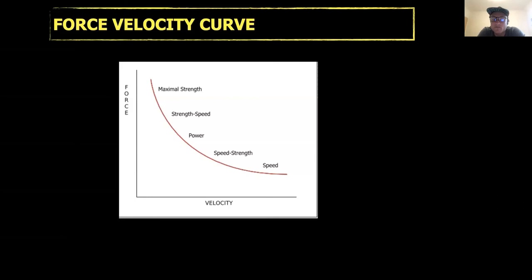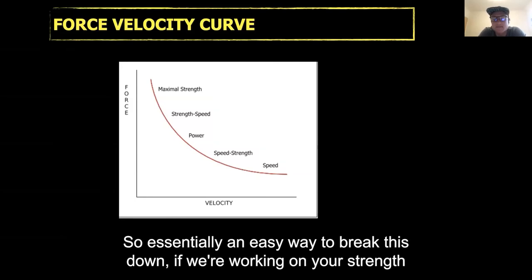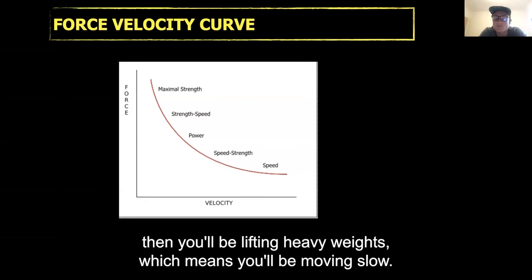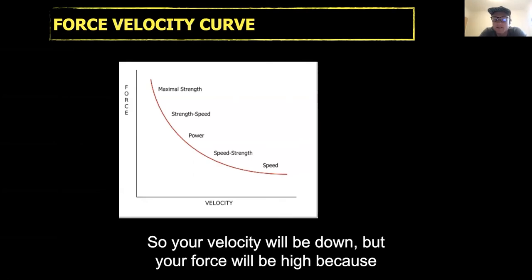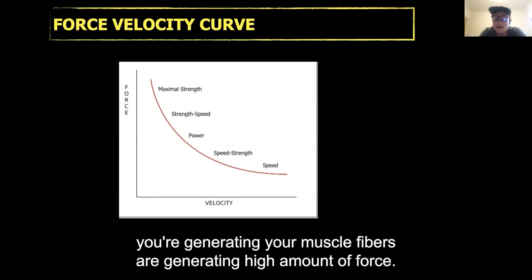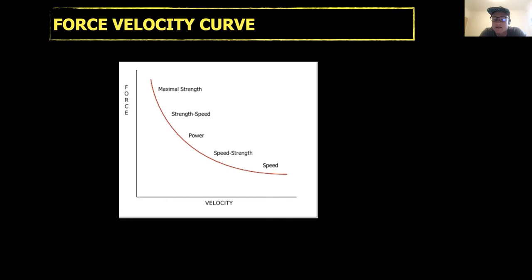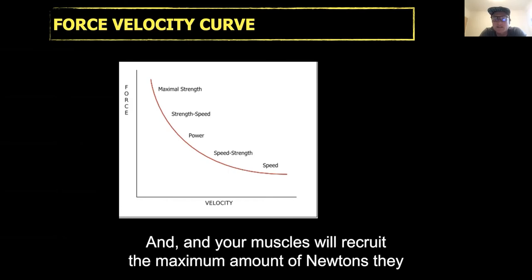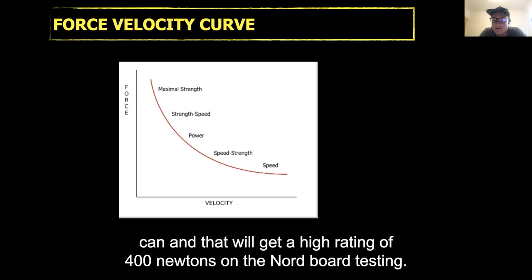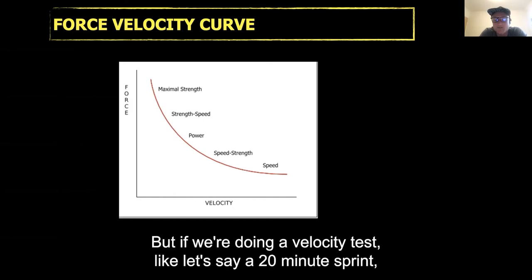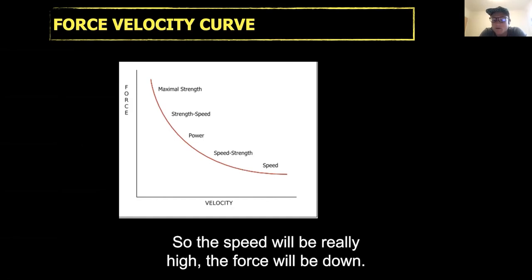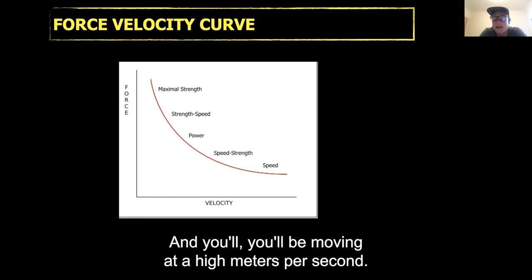Your force-velocity curve — an easy way to break this down: if we're working on your strength, you'll be lifting heavy weights, which means you'll be moving slow. Your velocity will be down, but your force will be high because your muscle fibers are generating a high amount of force. Like the Nordic test — that's a maximal strength test, and your muscles will recruit the maximum amount of newtons they can, getting a high rating of 400 newtons on the Nord board testing. But if we're doing a velocity test like a 20-meter sprint, that's a high-speed activity — speed will be really high, force will be down, and you'll be moving at a high meters per second.